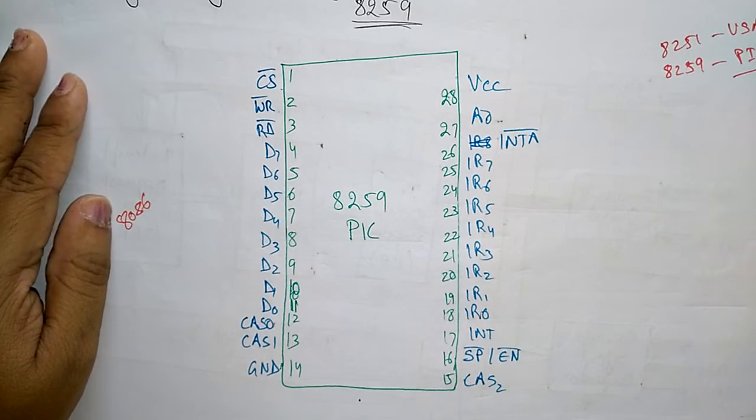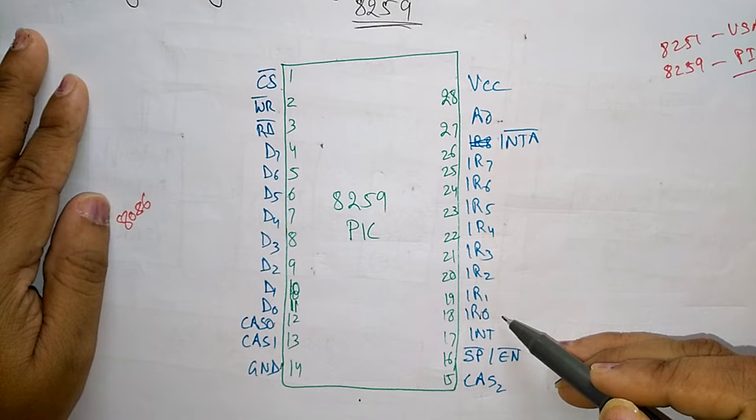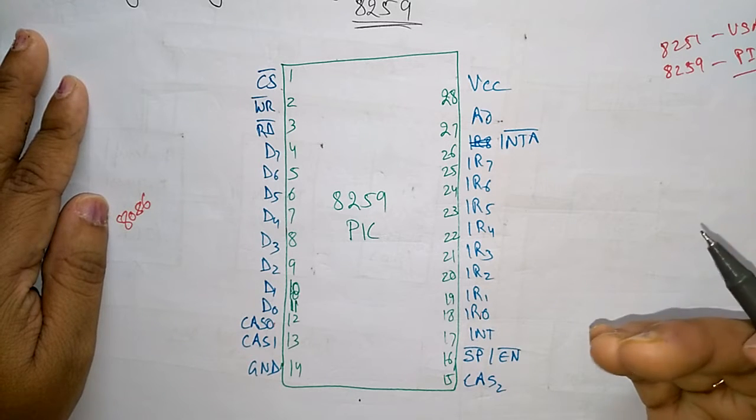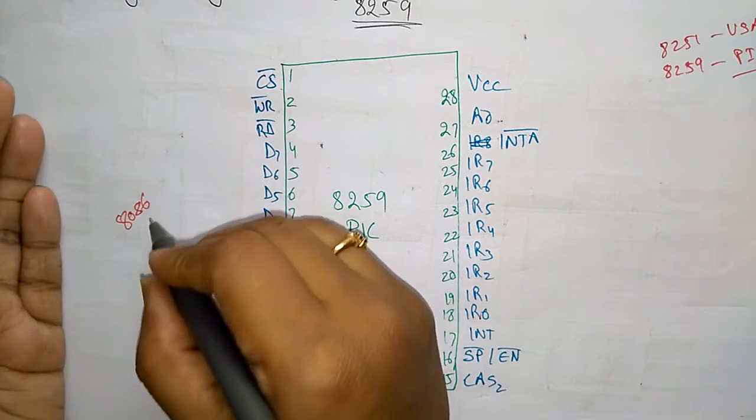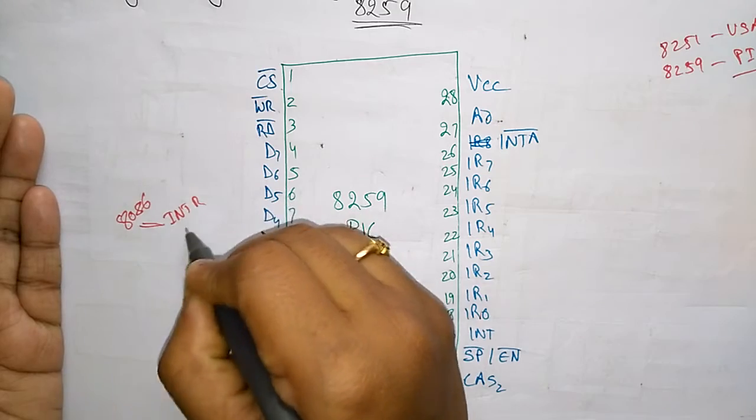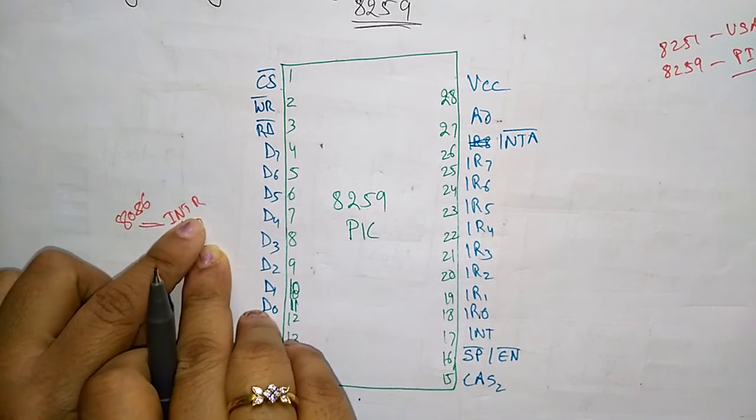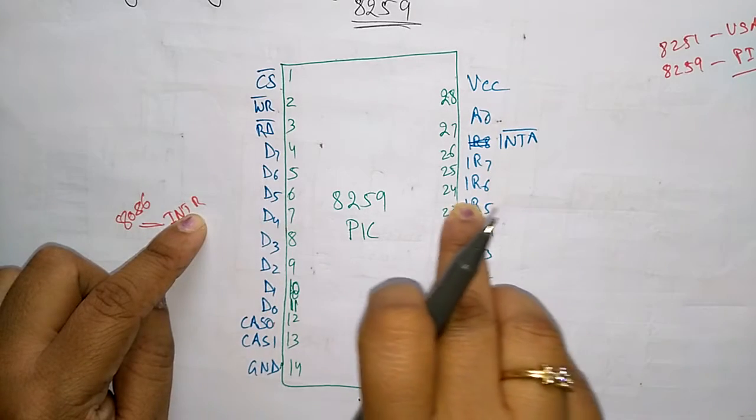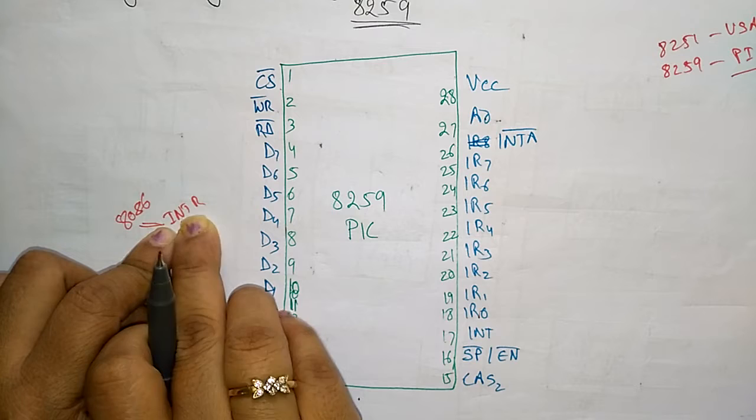A0 and VCC. Actually this 8259 handles eight interrupt inputs. These are the eight interrupt inputs. This is equivalent to providing eight interrupt pins on the processor, replaced in one INTR pin. Actually the INTR pin is there in 8086 microprocessor. So these eight interrupt pins are connected to the single INTR pin, so based on the priority of the request that interrupt will be sent to this INTR pin.